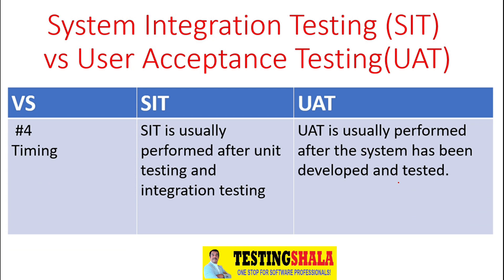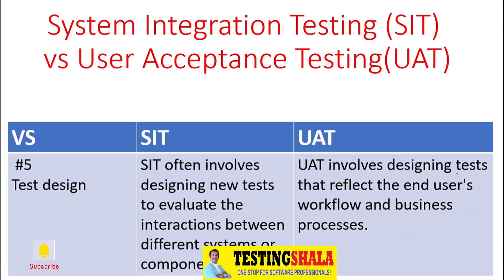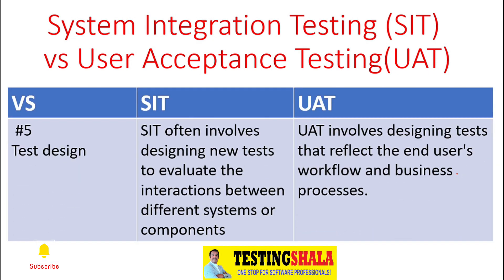The fourth key difference is in terms of timing. SIT is normally done once unit testing is completed, and UAT — User Acceptance Testing — will be done once development is completed and is normally performed by the stakeholders.